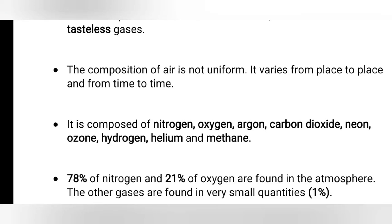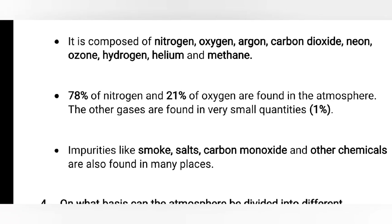These are the gases found in the atmosphere. 78% of nitrogen and 21% of oxygen are found in the atmosphere — together that is 99%. The remaining 1% consists of other gases found in very small quantities. Impurities like smoke, salts, carbon monoxide, and other chemicals are also found in many places.